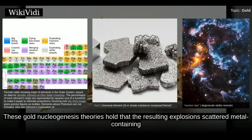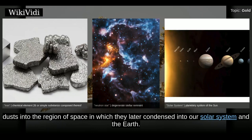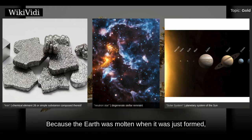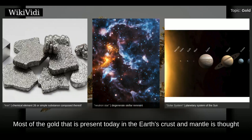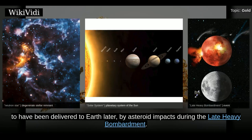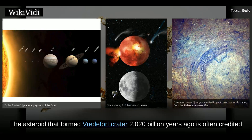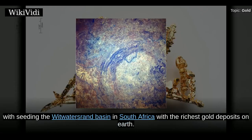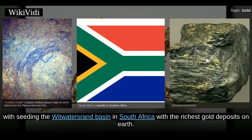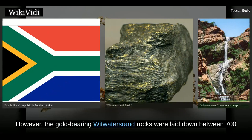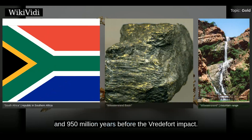These gold nucleogenesis theories hold that the resulting explosions scattered metal-containing dust into the region of space in which it later condensed into our solar system and the Earth. Because the Earth was molten when it was just formed, almost all of the gold present on Earth sank into the core. Most of the gold present today in the Earth's crust and mantle is thought to have been delivered to Earth later by asteroid impacts during the late heavy bombardment. The asteroid that formed the Vredefort Crater 2.020 billion years ago is often credited with seeding the Witwatersrand basin in South Africa with the richest gold deposits on Earth.